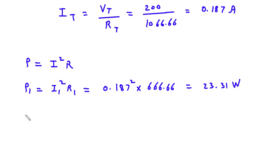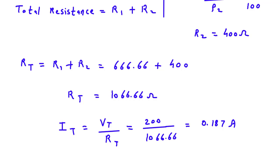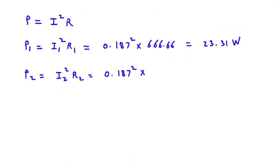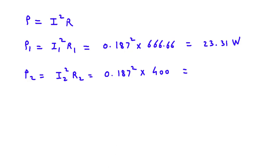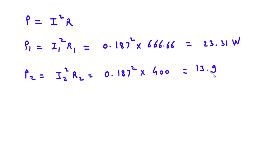Similarly, P2 equals I2 squared into R2. Again I2 remains the same at 0.187 Ampere squared, multiplied by R2. The value of R2 is 400 Ohm, so calculating this gives us 13.98 Watt.